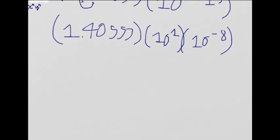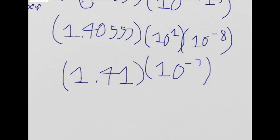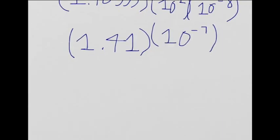Now we just combine those together, 10 to the negative 7th power. Well, we originally had 3 significant figures, so let's round it to that: 1, 2, 3 figures. So our final answer should be 1.41 times 10 to the negative 7th.